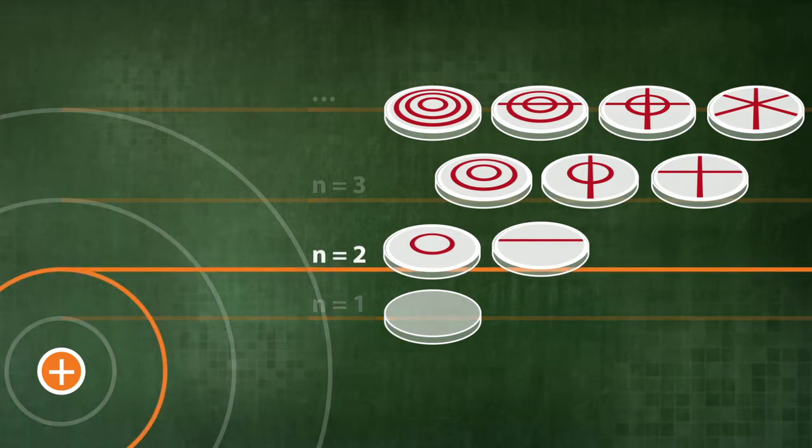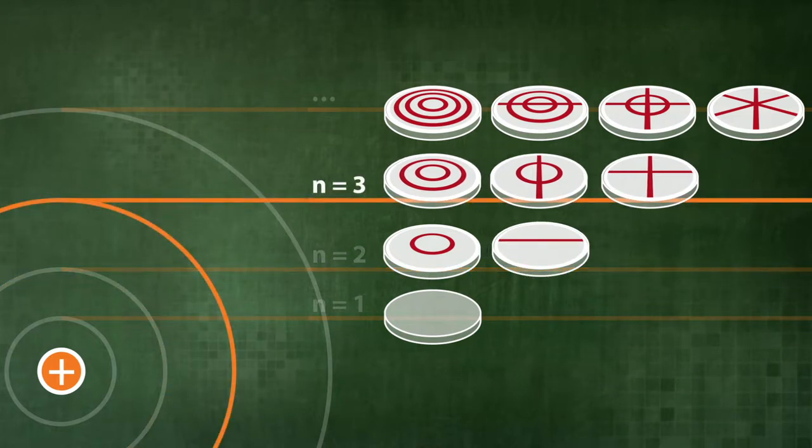The next orbit, n equals 2, has one nodal line, either radial or azimuthal. The third orbit, n equals 3, has two nodal lines. Those can be two radial lines, or one radial and one azimuthal, or two azimuthal lines.